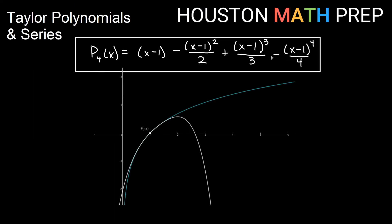We've graphed the fourth degree Taylor polynomial on top of ln of x. You can see it does a nice job approximating right around its center at x equals 1. As the function becomes undefined near the axis, the polynomial isn't accurate past that. It looks accurate out to about 2, and then it veers off quite a bit. So if you wanted a good approximation at some other value, you would either need more terms or adjust where you're centering your approximation. Hopefully this helps you with your Taylor polynomials and Taylor series — thanks for watching, we'll see you in the next video.